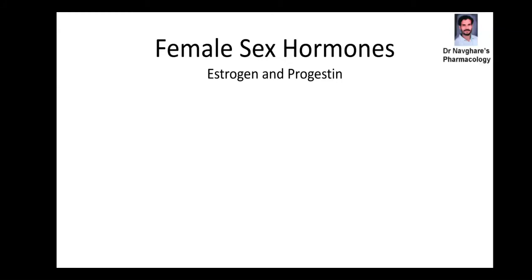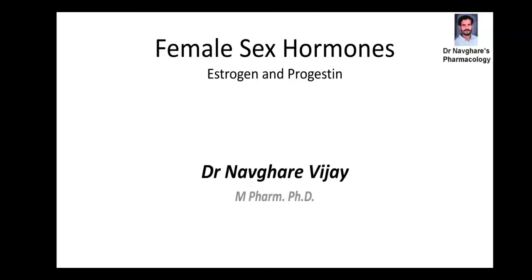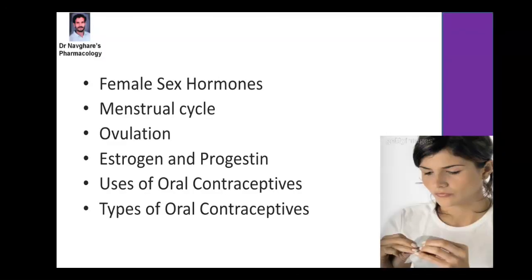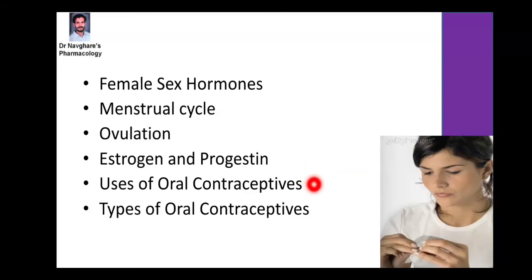Friends, today we will discuss about female sex hormones. The majority of female sex hormones include estrogen and progesterone. In this lecture, we will discuss about female sex hormones, menstrual cycle, ovulation, the role of estrogen and progesterone, use of oral contraceptives, and different types of oral contraceptives.